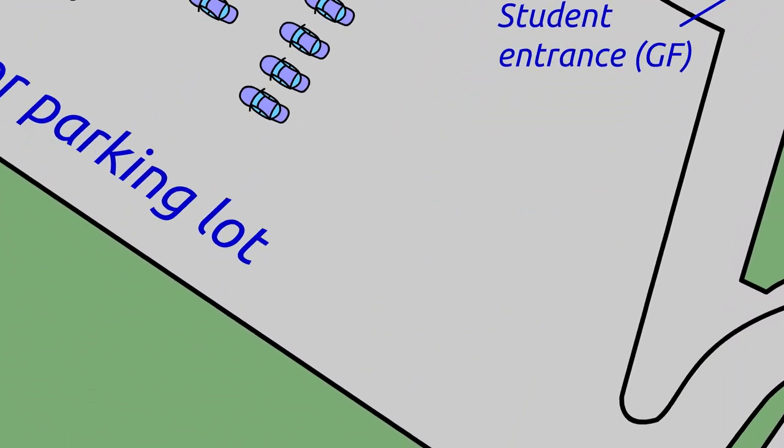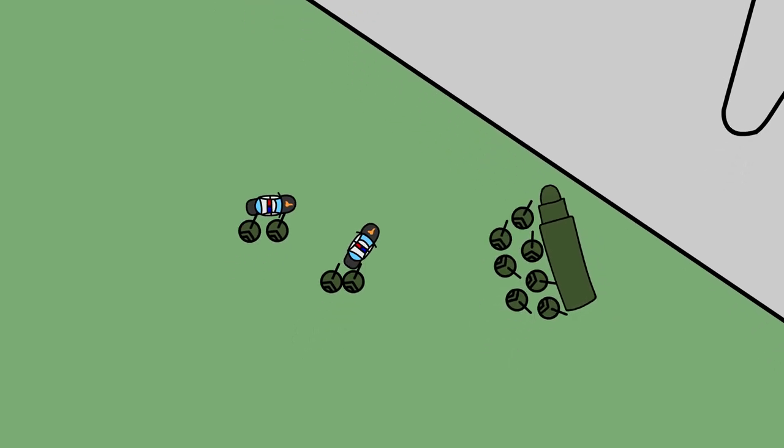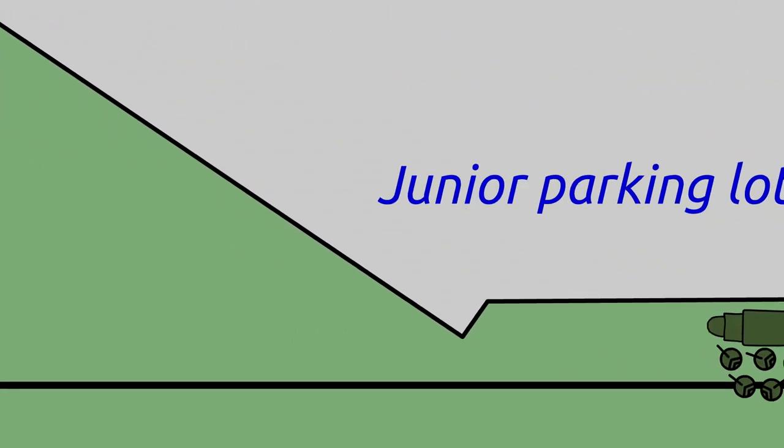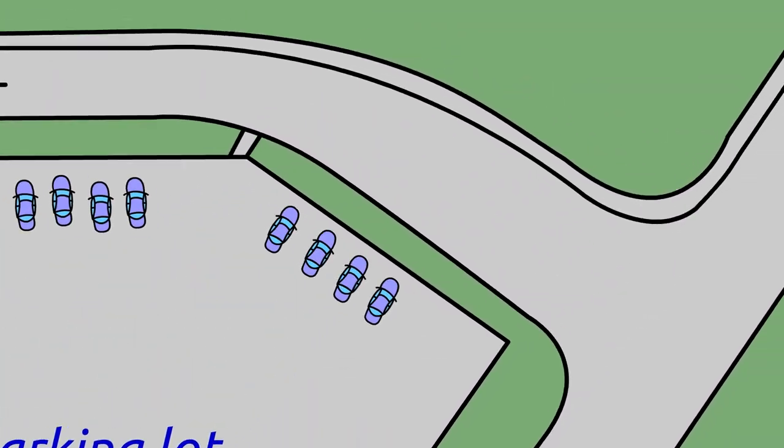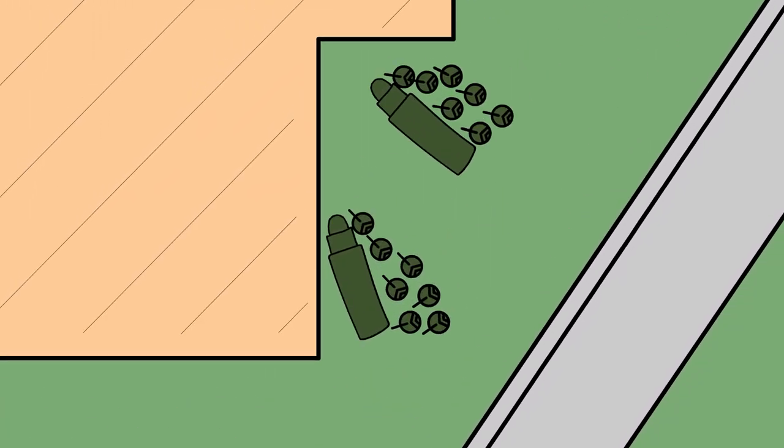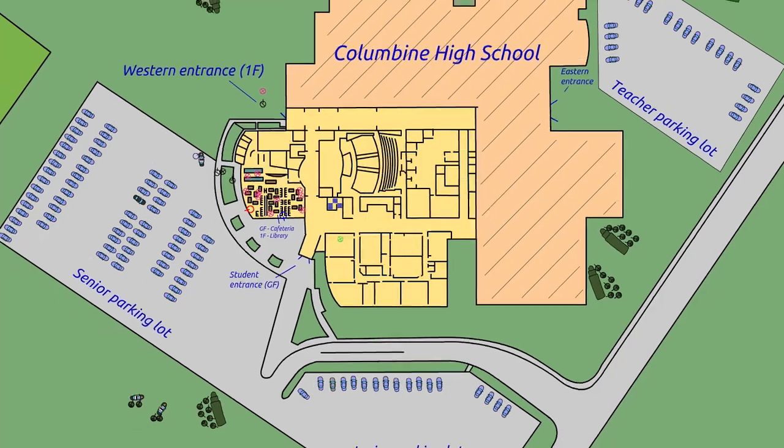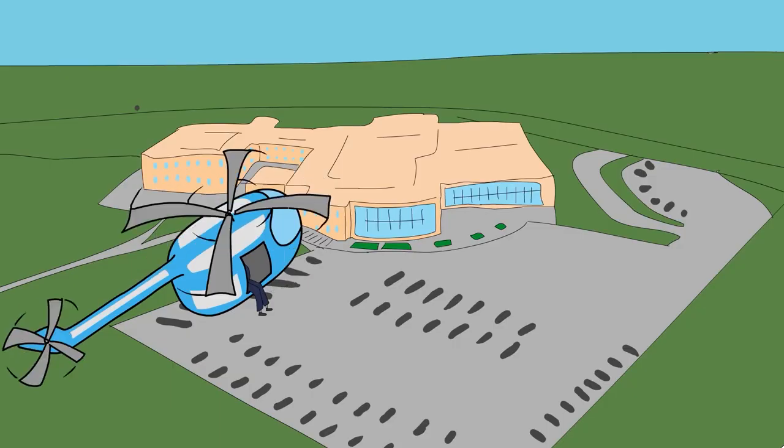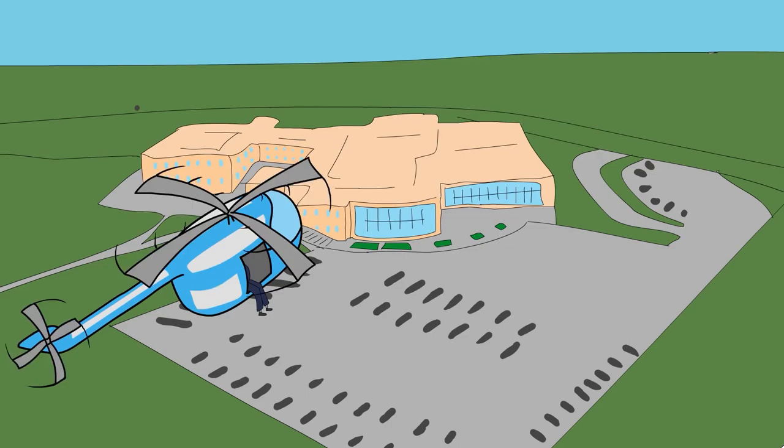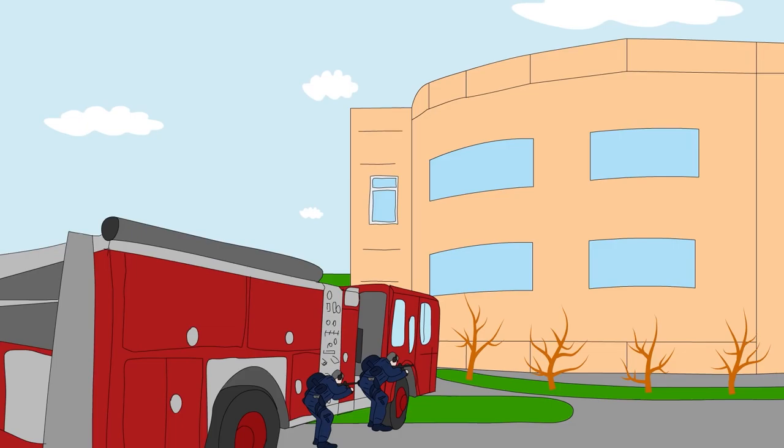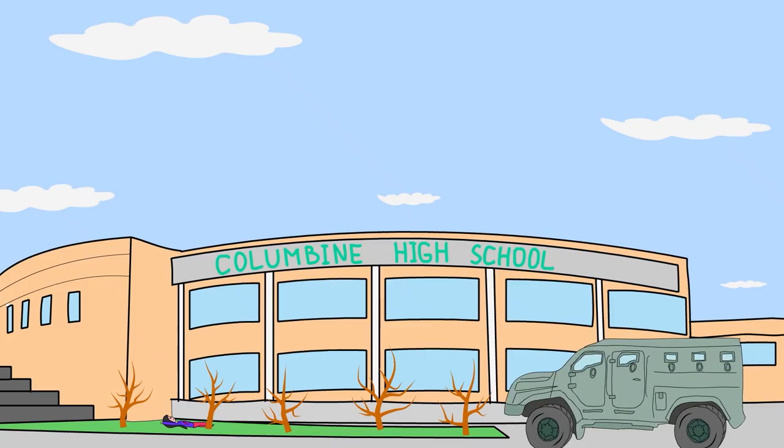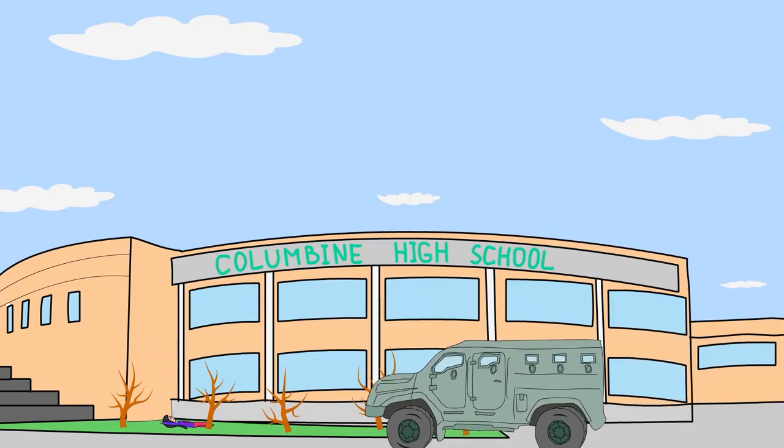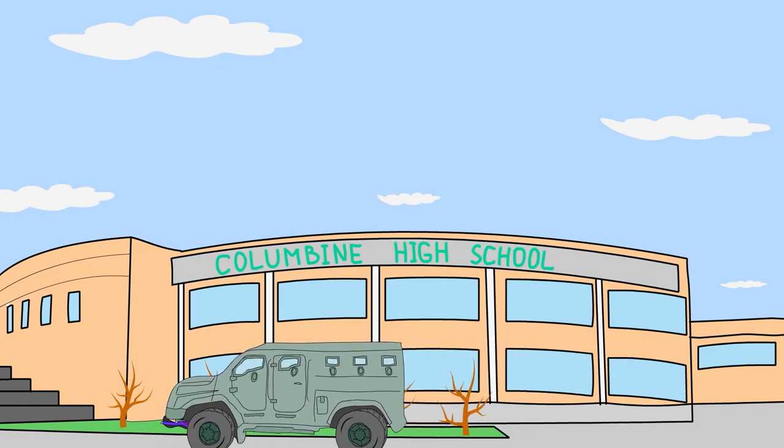By that moment, special forces had already taken their positions around the school building. They don't have any specific information about the number of shooters or their weapons. Nonetheless, an assault is prepared. The deputy sheriff takes a CNN helicopter and flies over the school area for surveillance. The special forces, by using a fire engine as a shield, slowly get closer to the building.